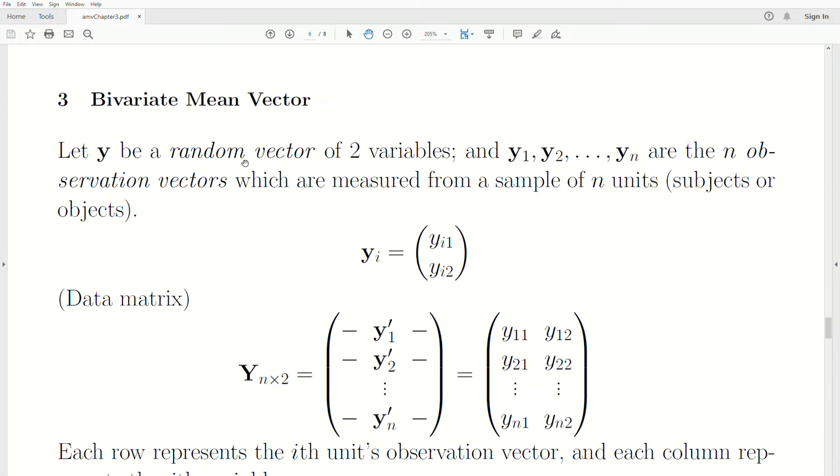Let y be a random vector of two variables, and let y1, y2 to yn are the n observation vectors which are measured from a sample of n units or subjects or objects.